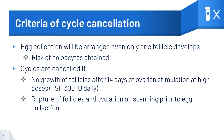Criteria for cycle cancellation. Egg collection will be arranged even if only one follicle develops, although there is a risk that no oocytes will be obtained. In some situations, the IVF cycle has to be cancelled — for example, if there is no growth after prolonged ovarian stimulation at high doses, or if there is rupture of follicle and ovulation on scanning prior to egg collection.